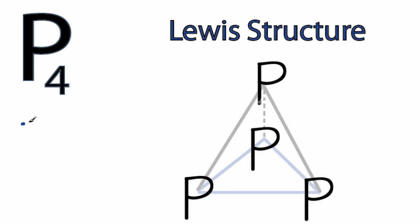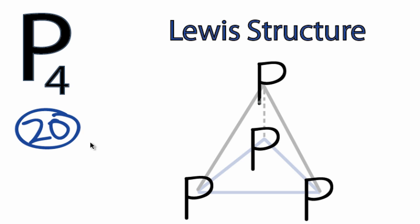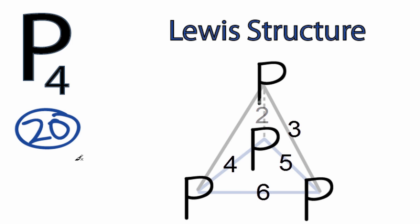We've used all four phosphorus atoms for the P4 Lewis structure. We have a total of 20 valence electrons. If we count the bonds we've already formed, we've formed one, two, three, four, five, six chemical bonds. Each of those lines represents a chemical bond, and each bond is two electrons, so we've used 12 valence electrons.